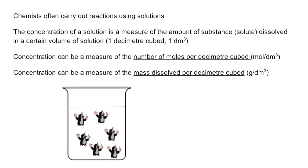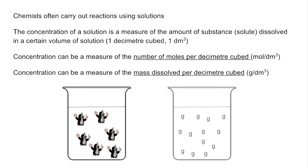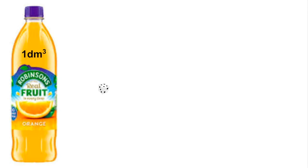So just to visualise that: we're talking about how many moles or how many grams are in one decimetre cubed. Before we go into any calculations it's a good idea to explain what a decimetre cubed is, since it's not a common unit. On the left we've got a bottle of squash — typically these are one litre — and one litre is actually the same as one decimetre cubed.